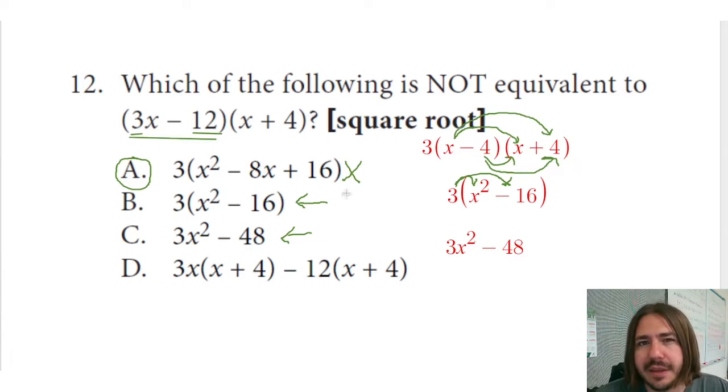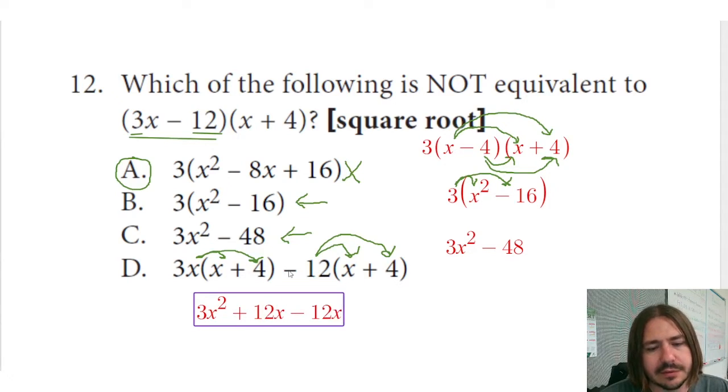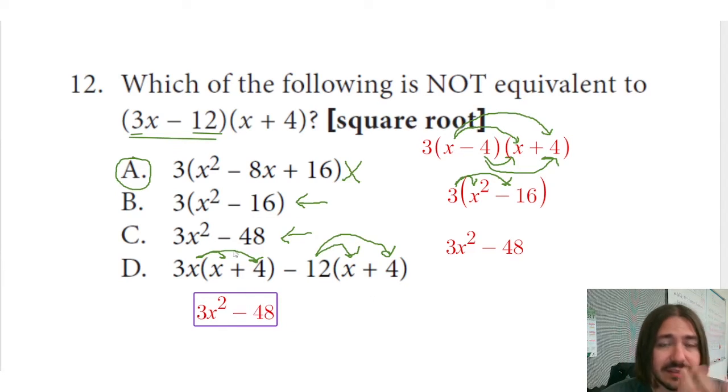D is probably going to be easier to actually work from the answer choice back and distribute the 3x and the negative 12, rather than trying to figure out how they came up with this expression. Really what's going on is it looks like they're sort of in the middle of factoring using grouping. Instead, what I'm going to do is distribute both of these. That's going to give me 3x squared plus 12x minus 12x minus 48. And then the plus 12x minus 12x is just going to be zero. So we get 3x minus 48, which is the same as C.